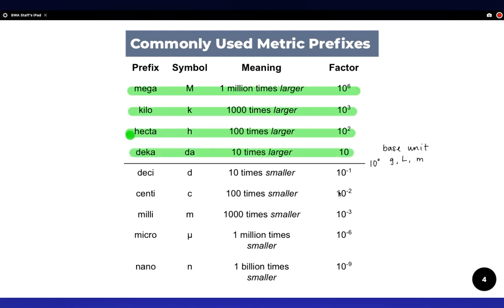If you're going to use one of these prefixes, it will look like this when you write it out. So let's say you wanted a kilometer.